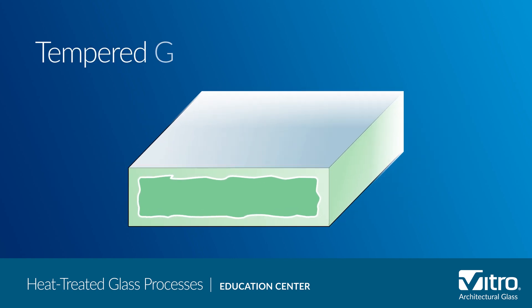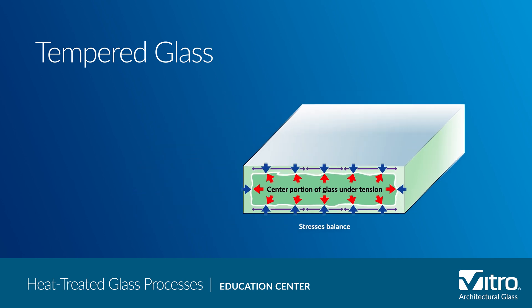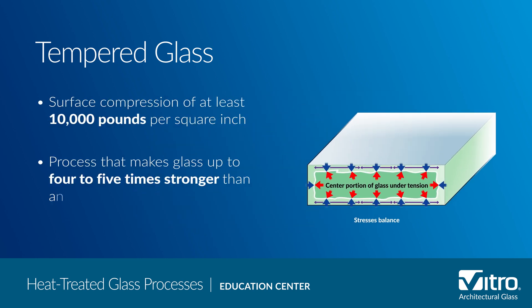With tempered glass, the cooling process is accelerated to create higher surface and edge compression in the glass. It is the air quench temperature, volume, and other variables that create a surface compression of at least 10,000 pounds per square inch. This process makes glass up to four to five times stronger than annealed or untreated glass, making tempered glass safer and less likely to experience a thermal break.